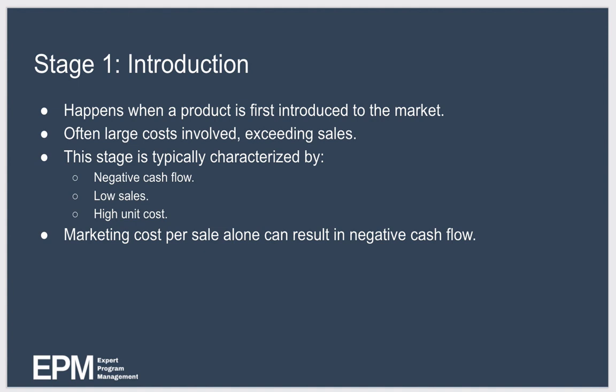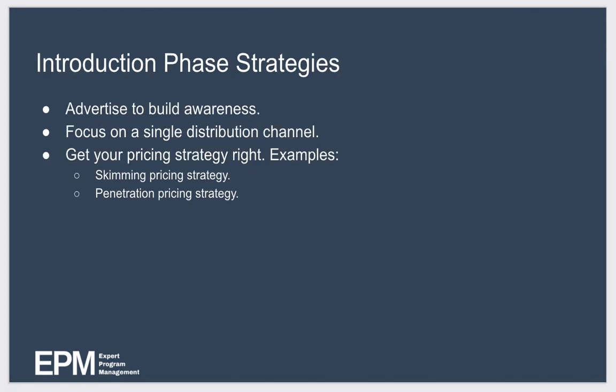High unit cost applies especially to physical products. For example, if you're running a factory, your utilization of that factory will be low while sales are low. Marketing cost per sale alone can often result in negative cash flow — that happens when a business invests heavily to make its potential customers aware of its new product. For each phase we'll discuss today, we'll also look at some common strategies companies use.